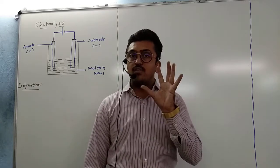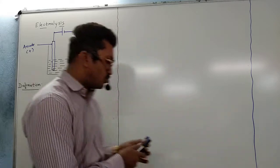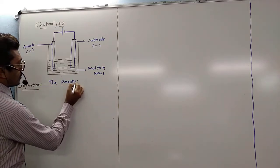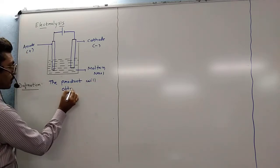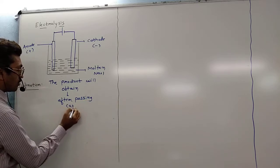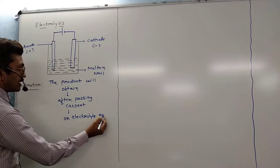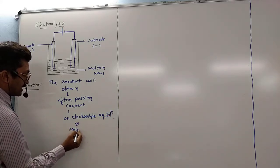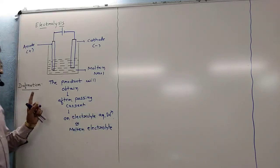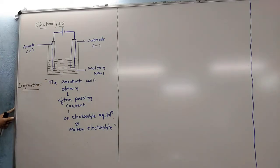Is it clear to all? We will pass current through both electrodes. The product will be obtained after passing current on an aqueous solution of electrolyte or molten electrolyte. So the product will be obtained after passing current on an aqueous solution of electrolyte or molten electrolyte. This process is known as the electrolysis process.